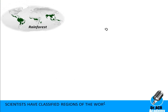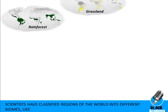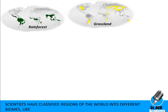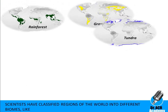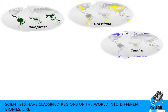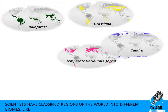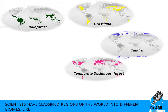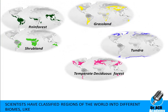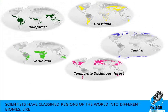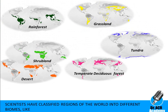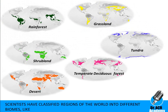Scientists have classified regions of the world into different biomes like rainforest, grassland, tundra, temperate deciduous forest, shrubland, desert, and coniferous forest.